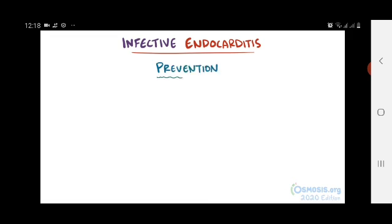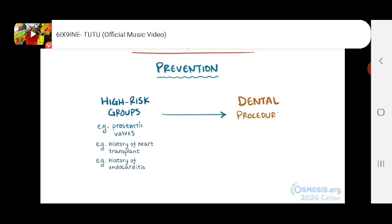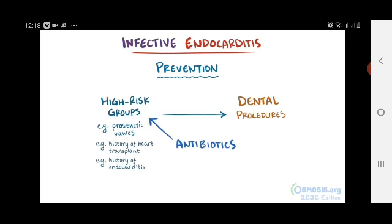It's also important to prevent endocarditis, especially among high-risk groups like those with prosthetic heart valves, history of heart transplant, and history of endocarditis. Before dental procedures, these people are sometimes recommended antibiotics, since some of those microbes that cause endocarditis live in the mouth.